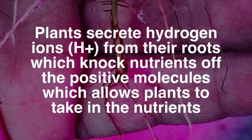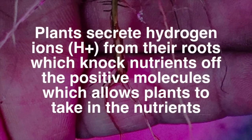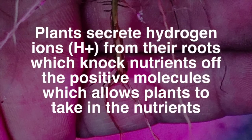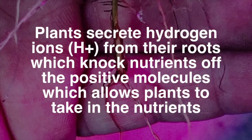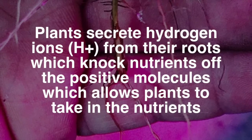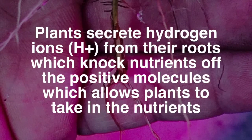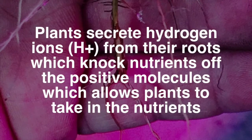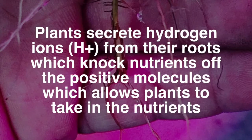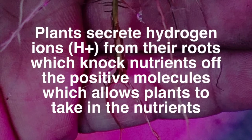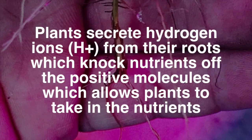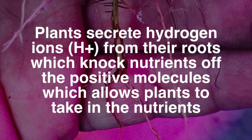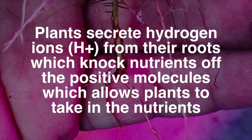In order to make these nutrients available, plants will secrete hydrogen ions. These positively charged ions will then knock the nutrients that are being held in the soil off of the particles, and they will be available to the plants to use.